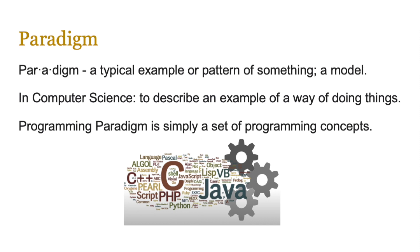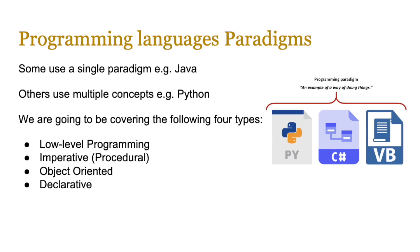The most common one you would have encountered is the imperative computing paradigm, which is writing things in a sequence — we do that in almost all programming languages, executing statements step by step. Most programming languages either use a single programming paradigm, for example Java, or multiple concepts, for example Python. We're going to be covering the following four types: low-level programming, imperative, object-oriented, and declarative.